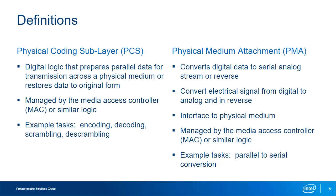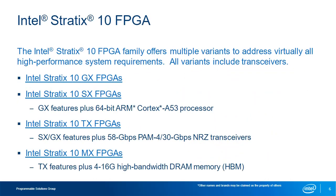The layers beyond the MAC are more concerned with where the data is going and what data is being sent or received. The Intel Stratix 10 FPGA family contains multiple variants to support virtually all high-performance system requirements, all of which include embedded transceivers. The GX variant is the base family. The SX variant adds a 64-bit ARM Cortex-A53 quad-core processor connected to the FPGA fabric through flexible data and control interfaces. The TX variant adds transceivers reaching speeds of 30 Gbps NRZ and 58 Gbps PAM-4. The MX variant adds a 4 to 16 Gbps high-bandwidth DRAM memory housed within the package along with the FPGA, drastically reducing complexity and performance limitations of connecting two discrete chips.